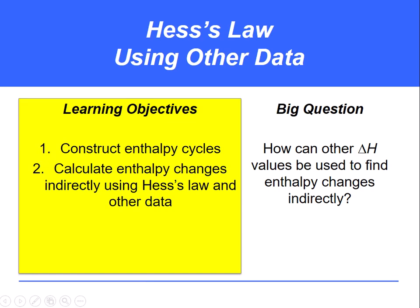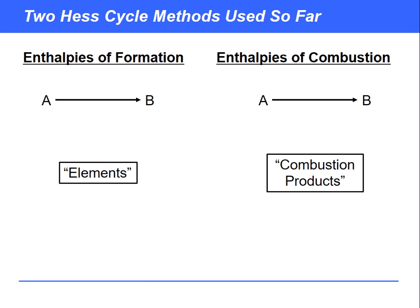Welcome to this video on using Hess's law to calculate enthalpy changes indirectly. In this video we're going to be looking at using miscellaneous or other enthalpy data in order to accomplish this. So far in the preceding two videos we've used two different Hess cycle methods to find enthalpy changes indirectly.